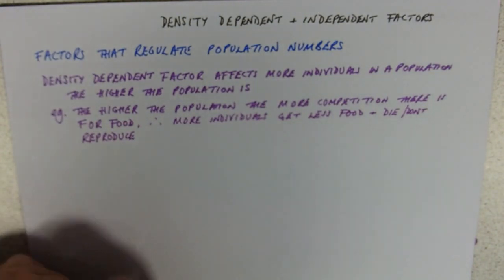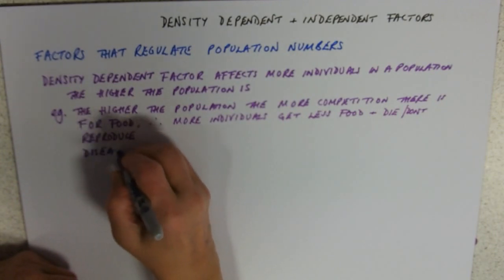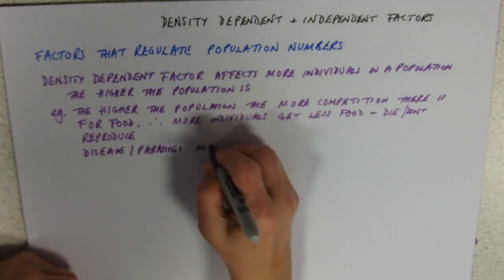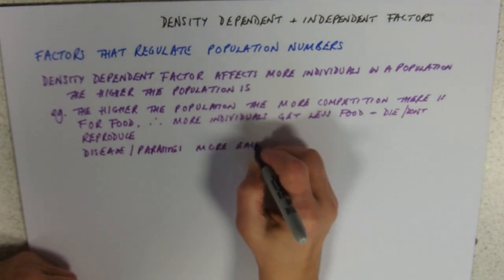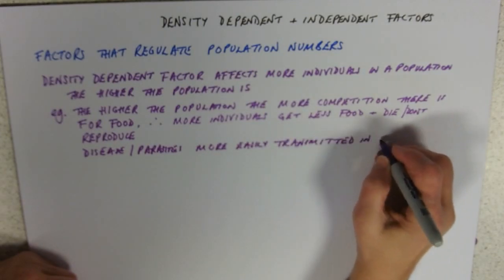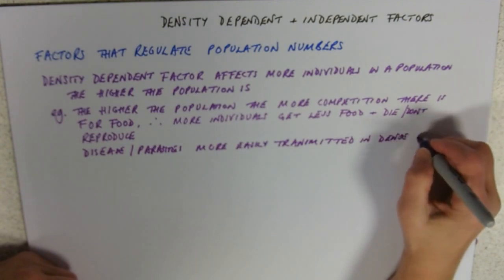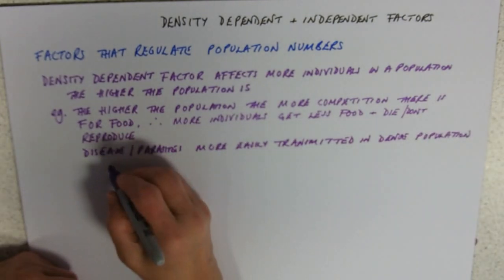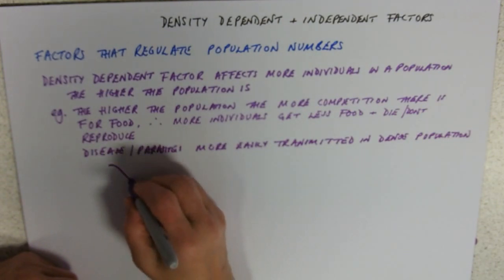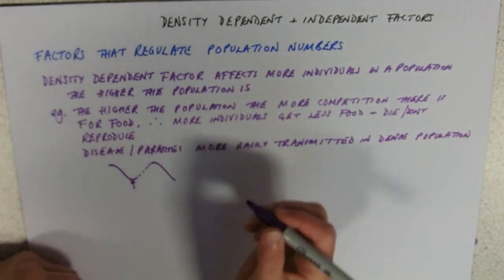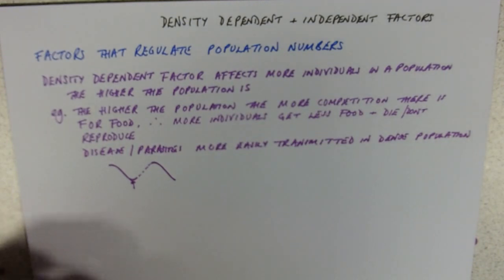We've also got things like disease or parasites and these are more easily transmitted in dense populations. All of those things cause less reproductive success and the less births you have, obviously then the population goes down and then that factor becomes less important and the population goes back up again. Then it becomes more important and the population goes down. So that's what causes that sort of wobble around the carrying capacity.